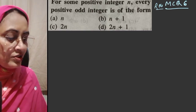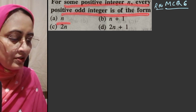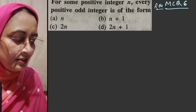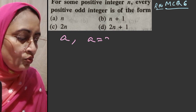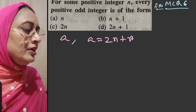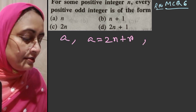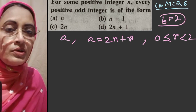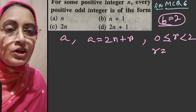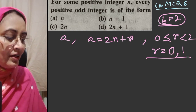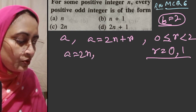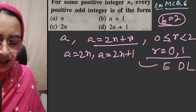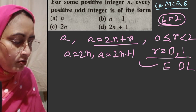Question number 6: for some positive integer n, every positive odd integer is of the form — n, n+1, 2n, or 2n+1? By Euclid's division lemma, if a is any positive integer, we can write a = 2n + r, where 0 ≤ r < 2. So r is either 0 or 1. If r equals 0, then a = 2n (even). If r equals 1, then a = 2n + 1 (odd). Therefore a must be of the form 2n or 2n+1.